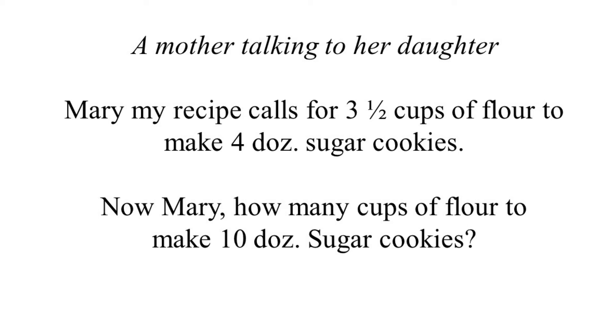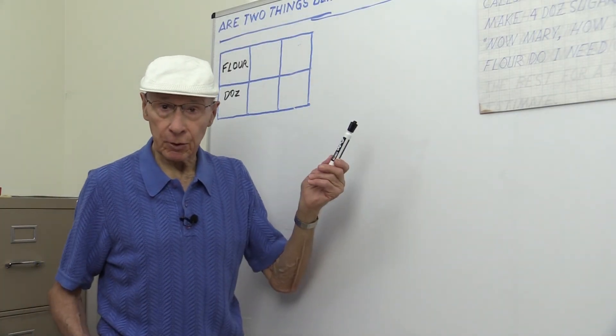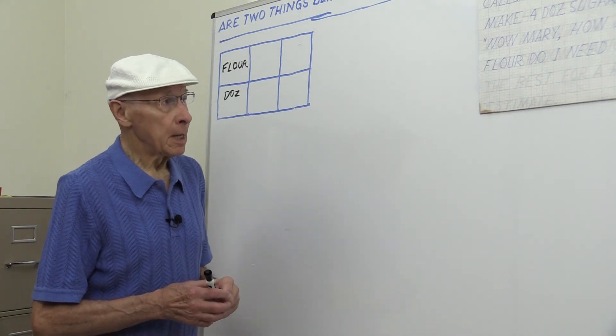So the number of cups is: we doubled the 3½ cups, and then you take half of the 3½, which gives you the 10 dozen or the number of cups of flour. If you add up those fractions, it comes out to be 8¾ cups of flour to make 10 dozen cookies.